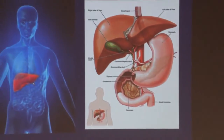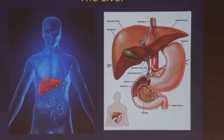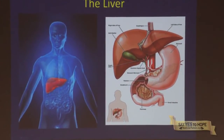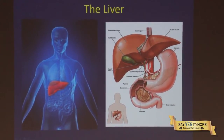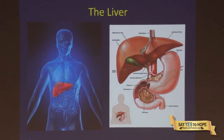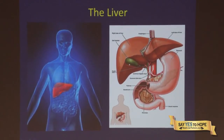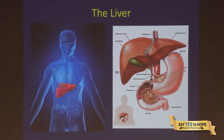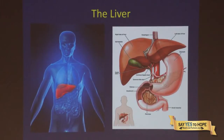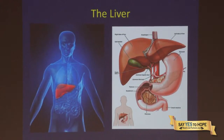The liver is the largest internal organ — actually the second largest organ overall behind the skin. It sits in the upper abdomen, in the mid-torso. You can see the liver here, along with the gallbladder, stomach, pancreas, the duodenum coming from the stomach, and another picture showing the location of the liver.